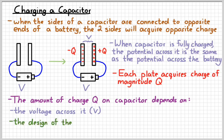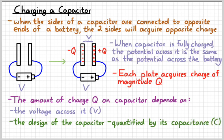And then the second factor is just the design of the capacitor itself. The way that we quantify this is with the term capacitance. The term capacitance is given the symbol capital C. And so the equation we could use to figure out the charge on a capacitor is just the capacitance times the voltage.